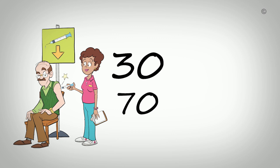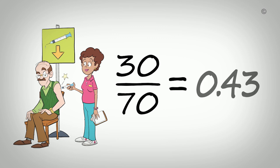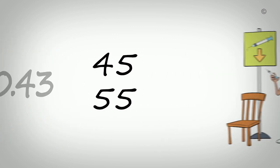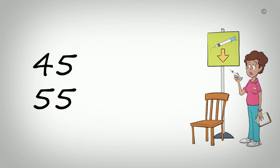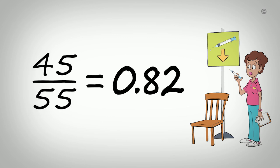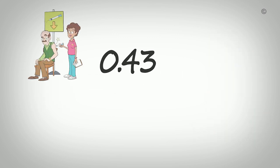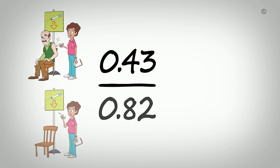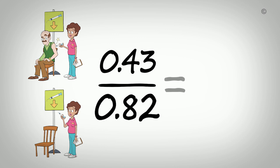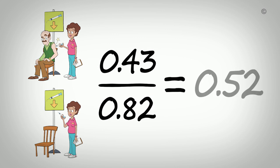In order to calculate the odds of getting the flu amongst those who had the flu shot, we divide the number of people who had the flu by the number of people who didn't. 30 divided by 70 equals an odds of 0.43. Then we calculate the odds of getting the flu amongst those who didn't get the flu shot the same way. 45 divided by 55 is an odds of 0.82. Finally, to find the odds ratio, we divide the odds of getting the flu among those who had the flu shot by the odds of getting the flu among those who didn't get the shot. 0.43 divided by 0.82 gives us an odds ratio of 0.52.